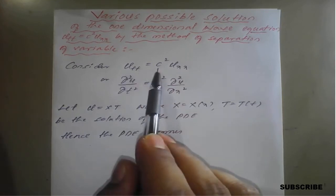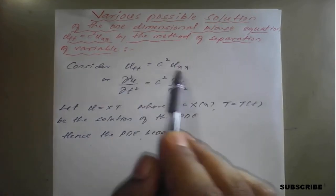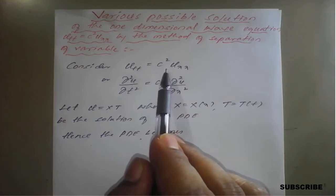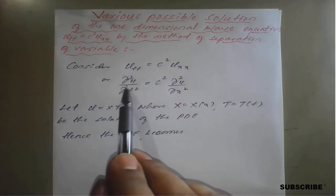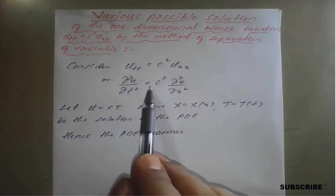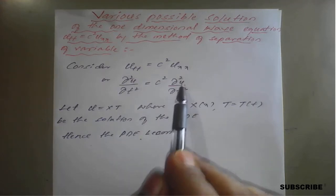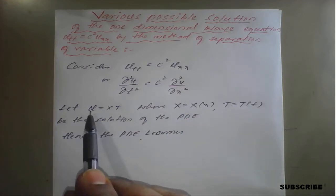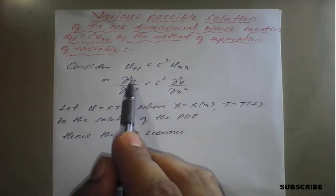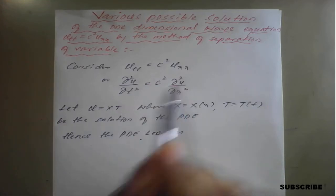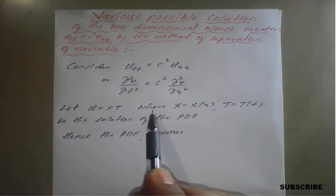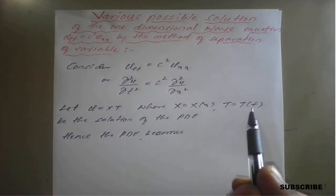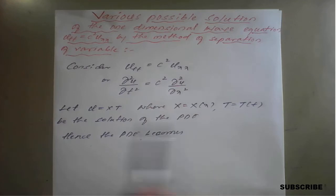Consider Utt = C² Uxx, which is the wave equation already derived in previous classes. It can be written as ∂²U/∂t² = C² ∂²U/∂x². Here we substitute U = X·T, where capital X = X(x) and capital T = T(t), as the solution of the PDE.